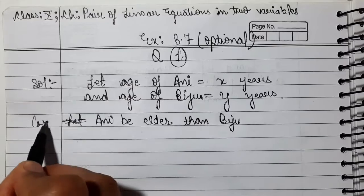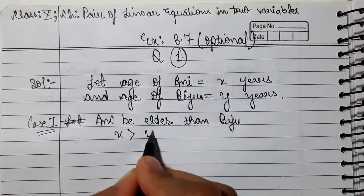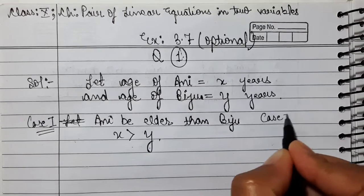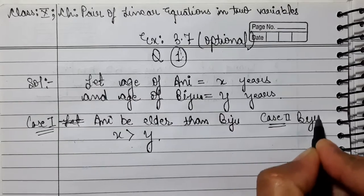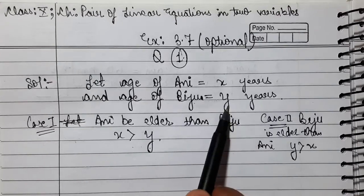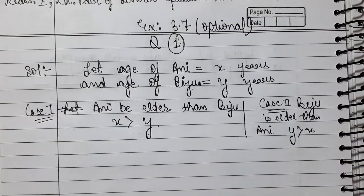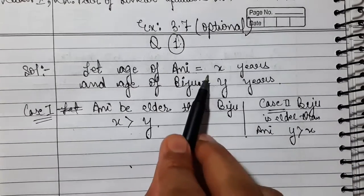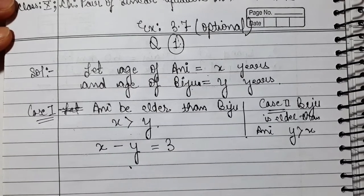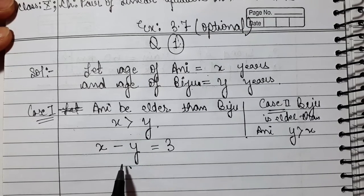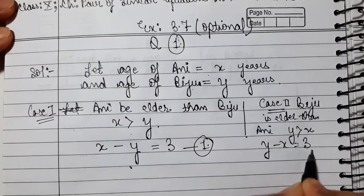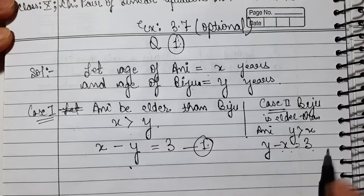Let us take two cases. Case number one: if Annie is elder than Biju, then X is greater than Y, meaning Annie's age is greater than Biju's age. Case number two: if Biju is elder than Annie, then Y is greater than X. So we take two cases. In case one, Annie's age minus Biju's age equals 3 years — that gives equation 1: X minus Y equals 3. In case two, if Biju is bigger, then Y minus X equals 3 — that is equation number 2.